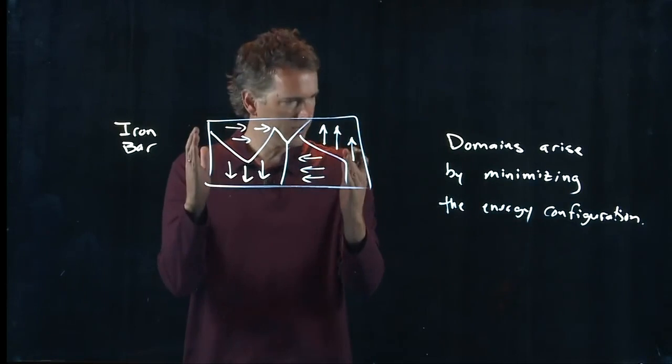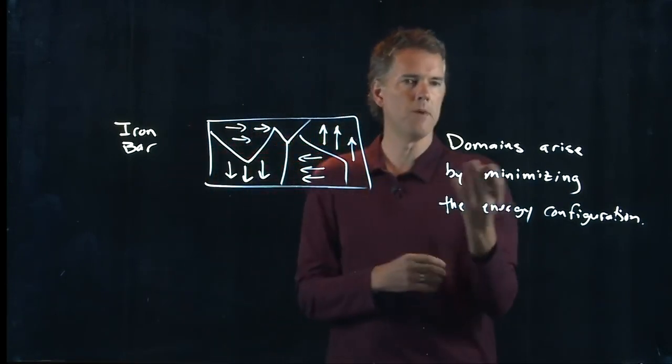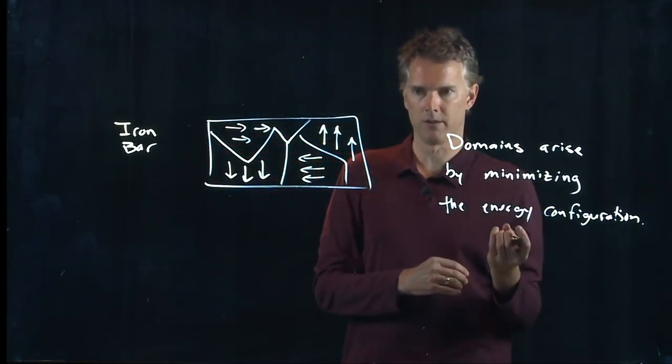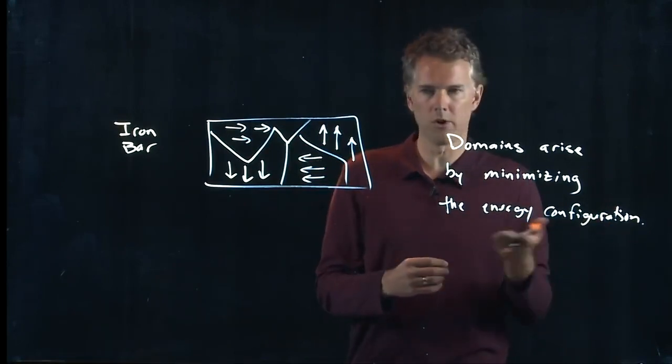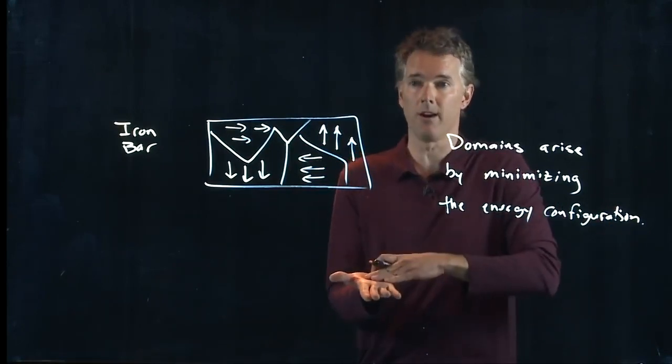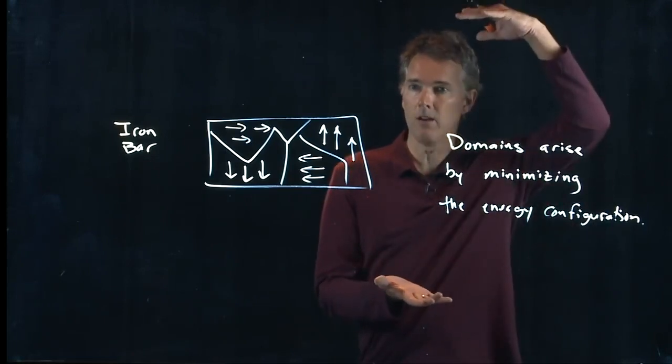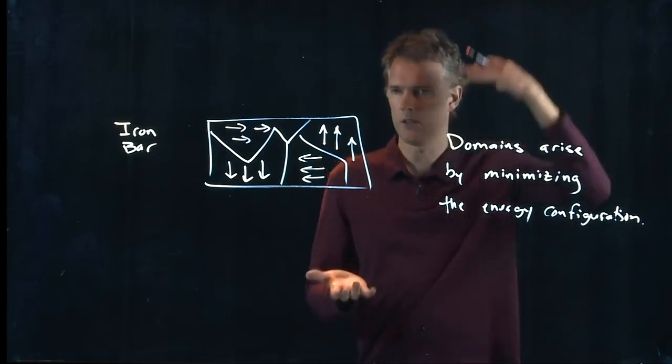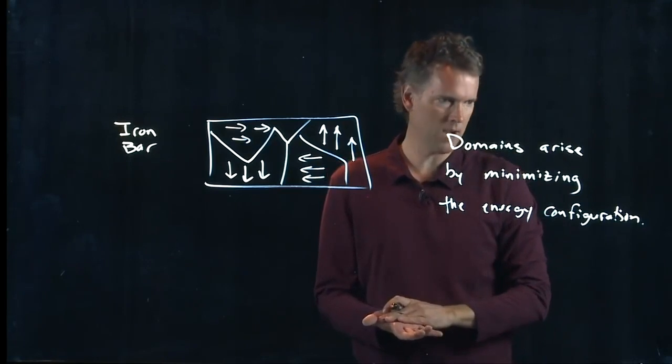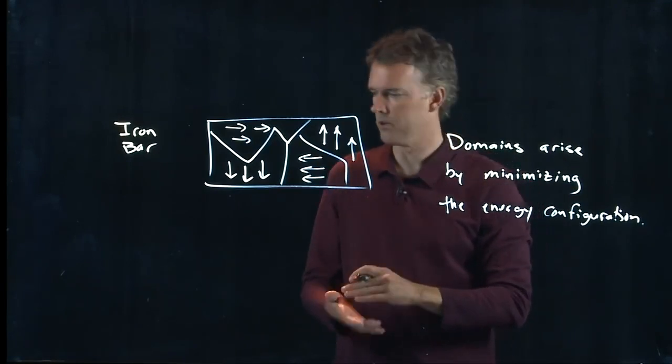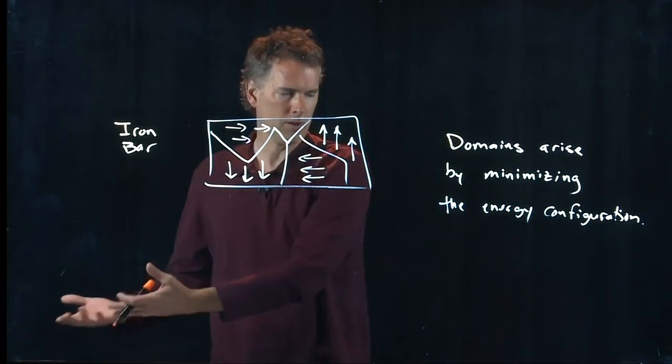Iron bars, like anything else in their natural state, want to minimize that energy configuration. You want to minimize your energy configuration because you're on the ground. If you were up in the air you would have a lot of potential energy and that's not a minimum. So being on the ground minimizes your energy state, just like when you knock something off it falls to the ground.